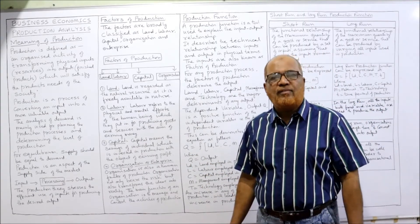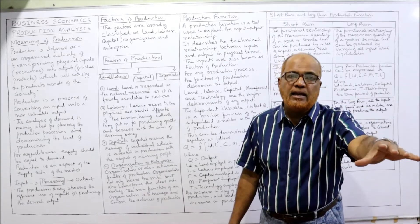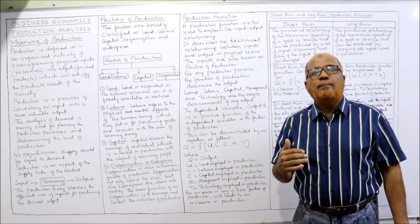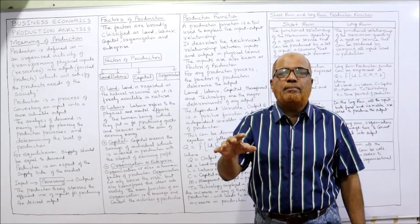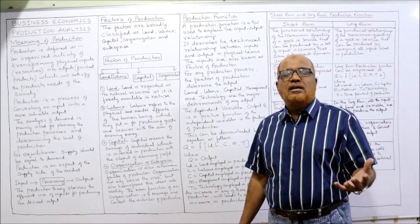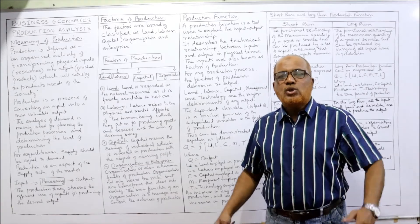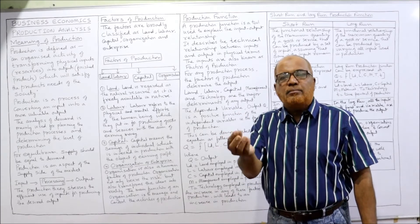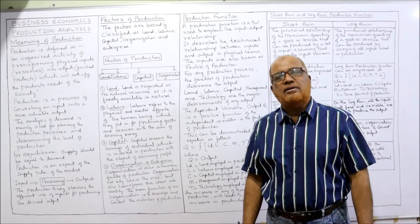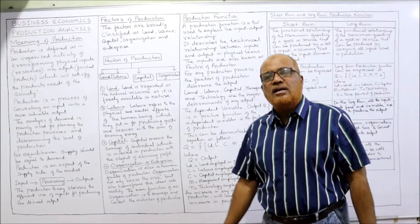The second factor is labour. Labour refers to the physical and mental efforts of human beings applied in the production process so that workers can earn income. Third comes capital. Capital means the savings of individuals which are used in the production process in order to gain profit. People earn income, make savings, and those savings are applied in production to earn profit. The money resources used in production are called capital.